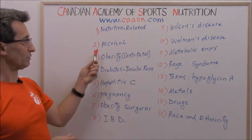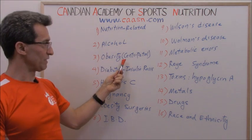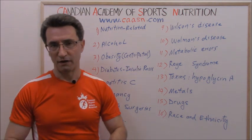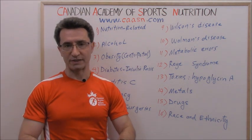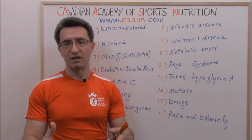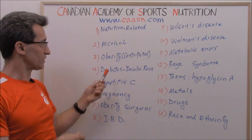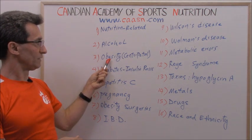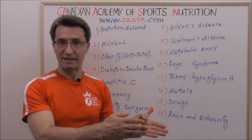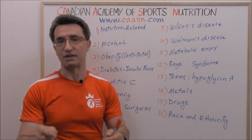Number two: alcohol. Number three: obesity — especially visceral fat-centered obesity. If you are obese and your obesity comes mostly from visceral fat, you are at risk. Obesity can lead to fatty liver, and fatty liver can lead to obesity — a vicious cycle.